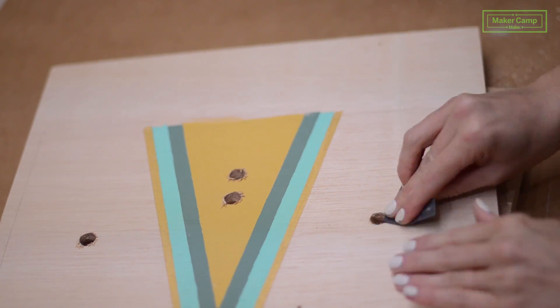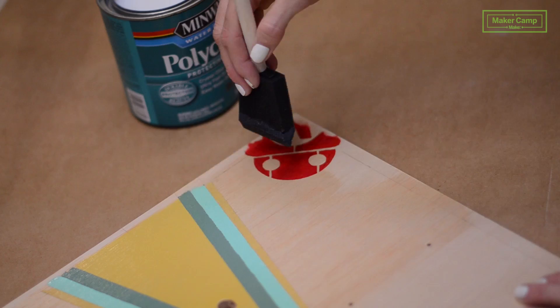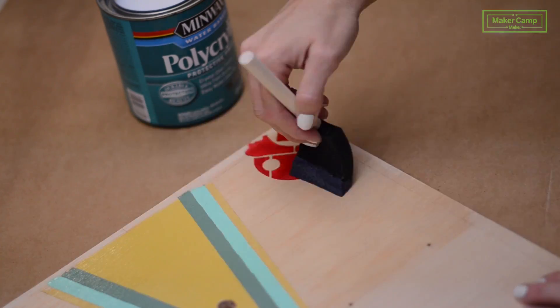Sand your drilled holes. Now we're going to protect our playing board with some polyurethane. Make sure you erase all your pencil marks before you cover it.